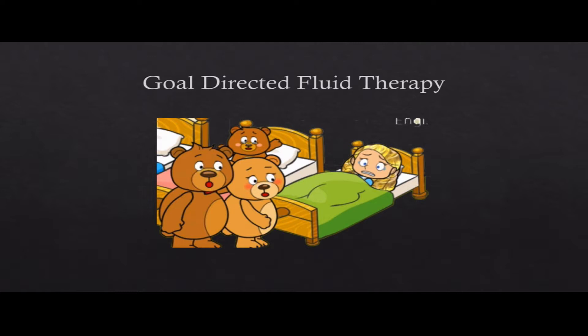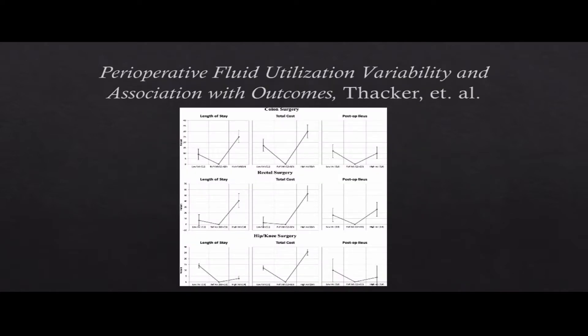Also: the third space does not exist. Stop trying to fill it. Surgeons and anesthesiologists talk about third spacing, but there is no third space. This study looked at colon surgery, rectal surgery, hip and knee surgery — and across all of them the data shows V-shapes: too much fluid causes complications, too little causes complications. You want to give them the right amount.